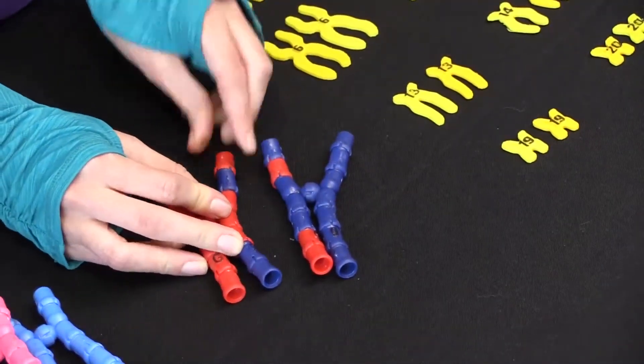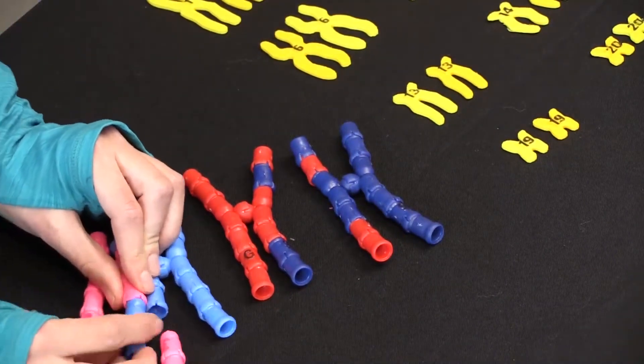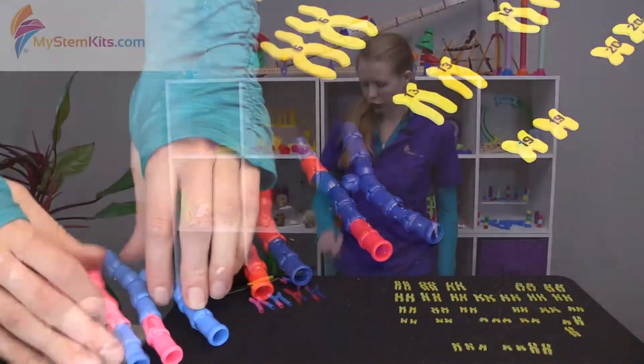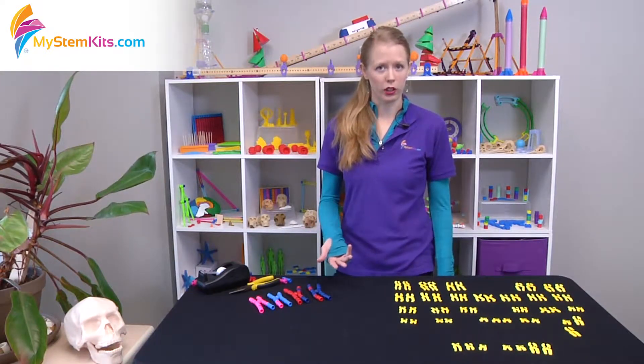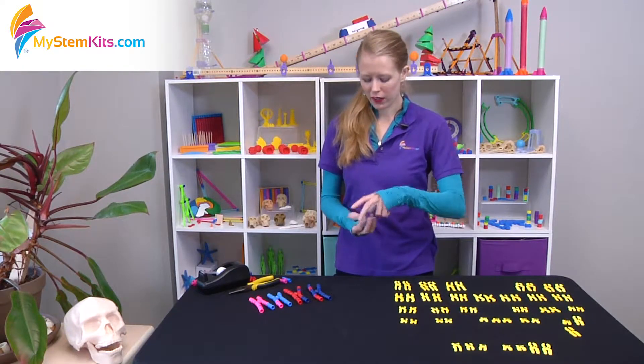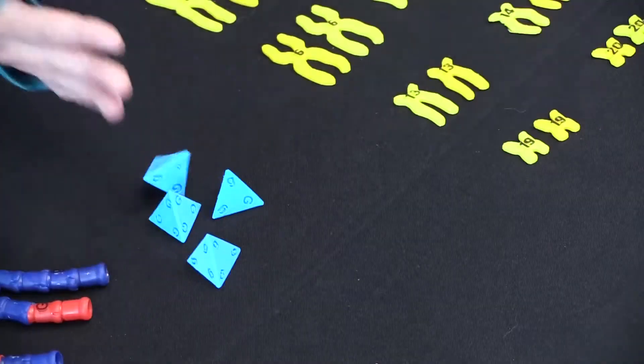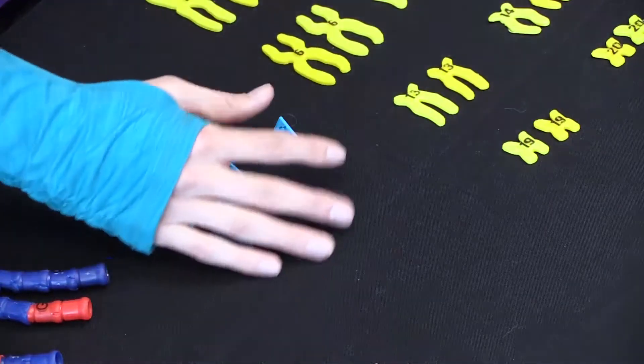For instance during metaphase one you have the option of demonstrating for your students crossing over as one of the ways that genetic variance happens. So when they bring their chromosomes together you can actually snap the pieces apart and trade them out. Once they've crossed over you can move on to the following phases. So that's a basic overview of how the chromosome kit works.